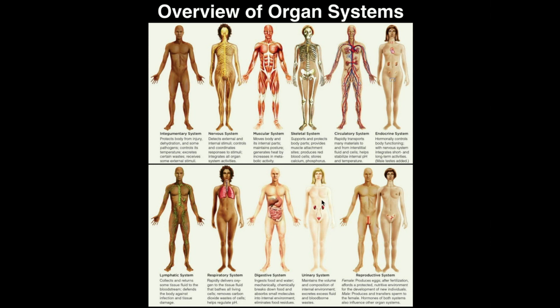The urinary system first of all helps maintain the blood volume and the composition of the blood. Whenever there's excess waste in your blood, the urinary system filters it out and you urinate the waste away. So the urinary system is the main system involved in regulating waste from your internal environment, such as the blood.